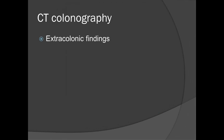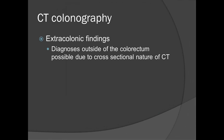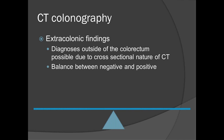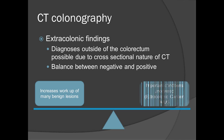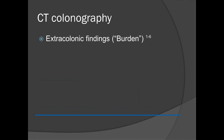The second topic is extracolonic findings. Since CTC is essentially a CT exam, there are diagnoses we can see outside of the colorectum. People say you're going to see a lot of things outside of the colon — people will worry, you'll have to work them up, many will turn up negative — increasing exams, anxiety, costs, and possible complications. This is described as a big negative to CTC screening. But you have to consider the balance between negative and positive, because even though there will be many benign lesions, there will be a couple of important lesions — cancers and AAAs (abdominal aortic aneurysms) — that we would want to know about.